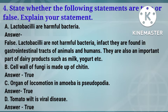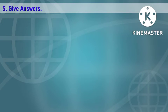Second — the cell wall of fungi is made of chitin. The answer is true. Third — locomotion in amoeba is by pseudopodia. The answer is true. Fourth — tomato wilt is a viral disease. The answer is true.